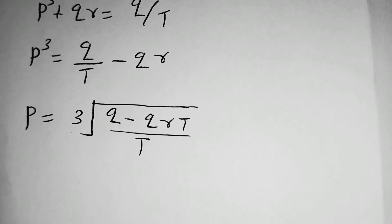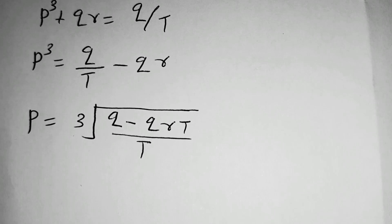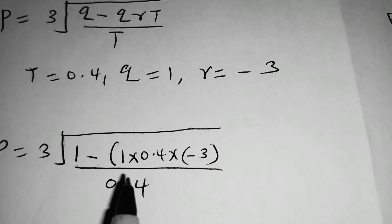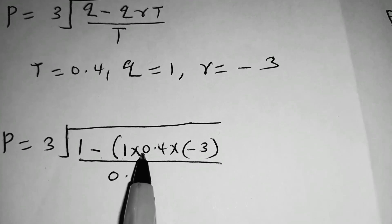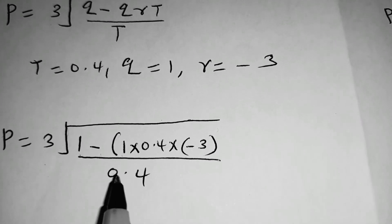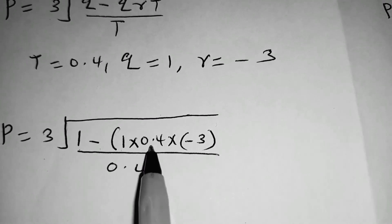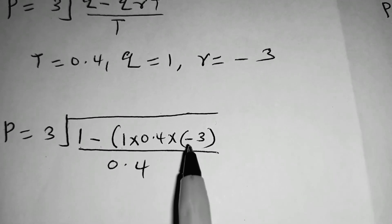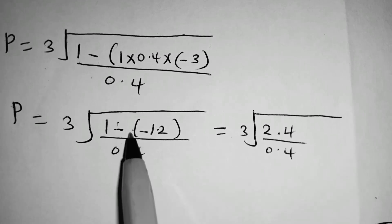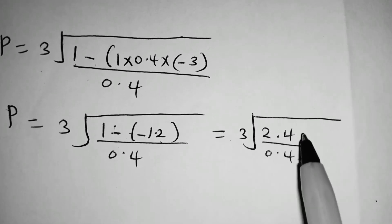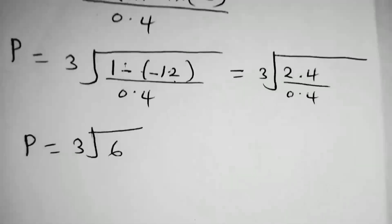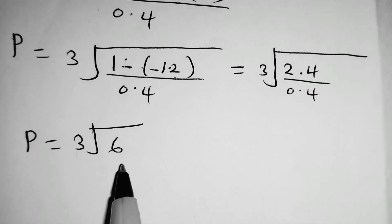We are told T is equal to 0.4, Q is equal to 1, and R is equal to negative 3. So we have the cube root of 1 minus 1 times 0.4 times negative 3, divided by 0.4. That gives 0.4 multiplied by negative 3 equals negative 1.2. So 1 minus negative 1.2 equals 1 plus 1.2, which is 2.4, divided by 0.4, giving 6. So P equals the cube root of 6.